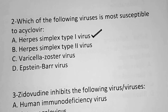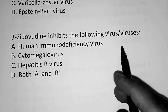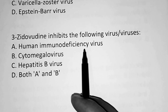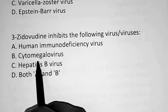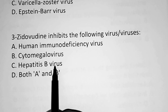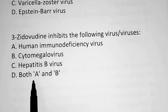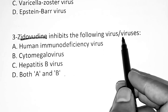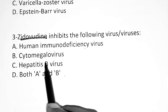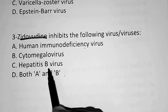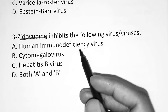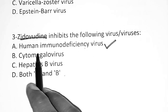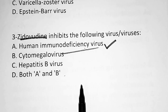Question 3: Zidovudine inhibits which of the following viruses? Option A: human immunodeficiency virus (HIV), Option B: cytomegalovirus, Option C: hepatitis B virus, Option D: both A and B. The correct answer is Option A — Zidovudine inhibits HIV virus.